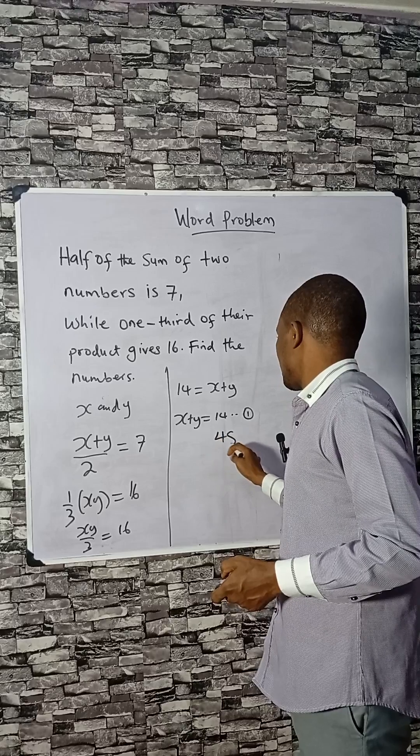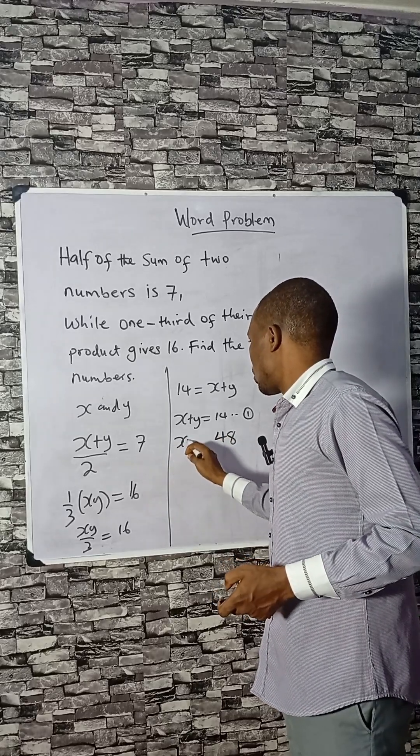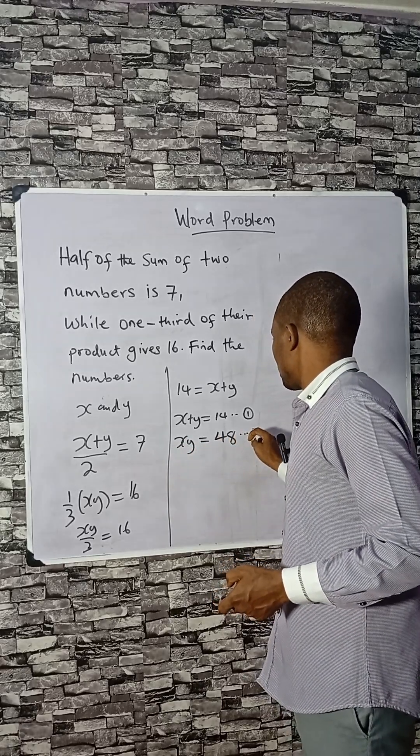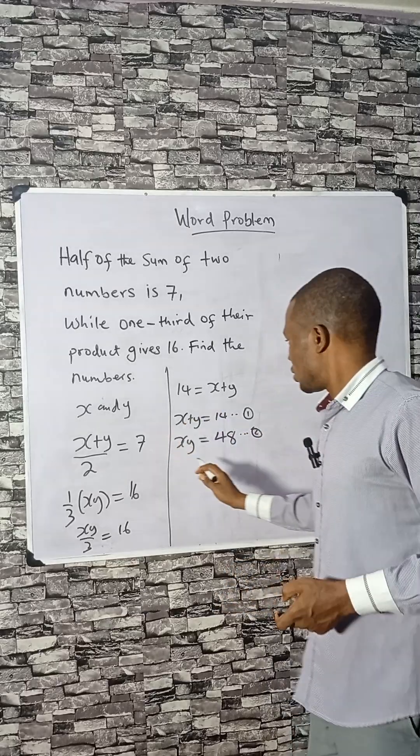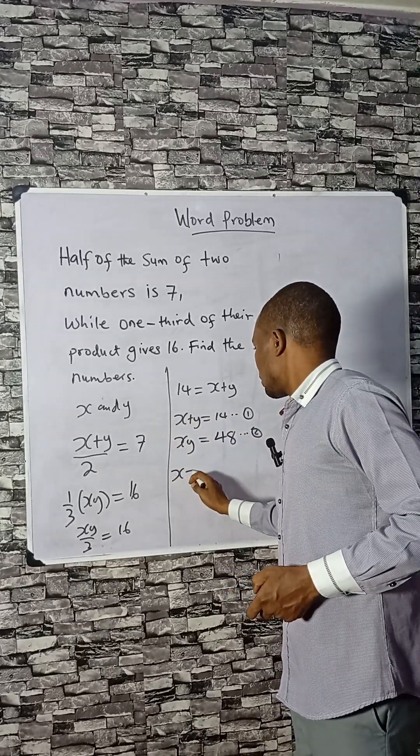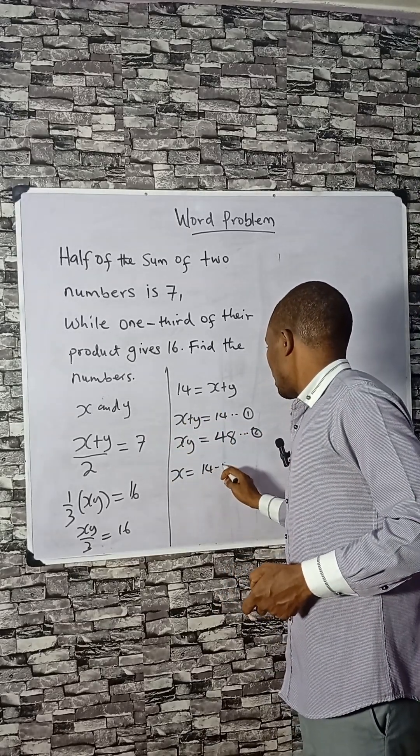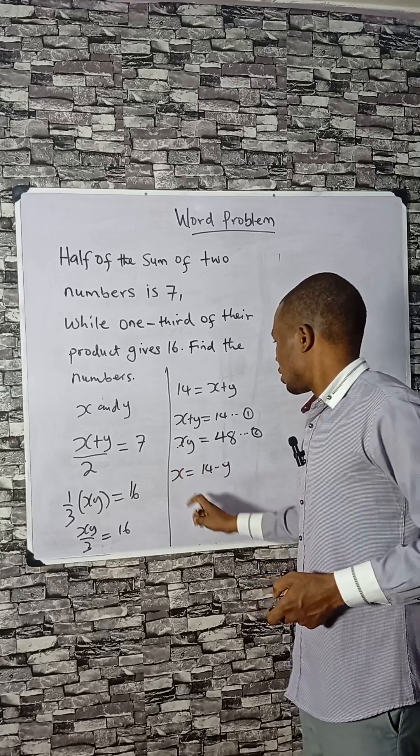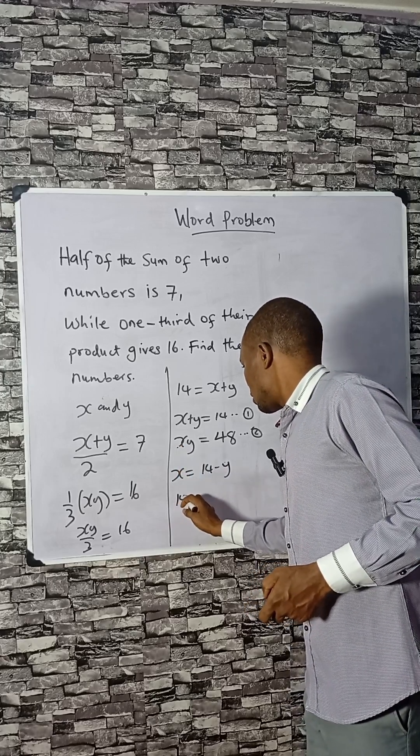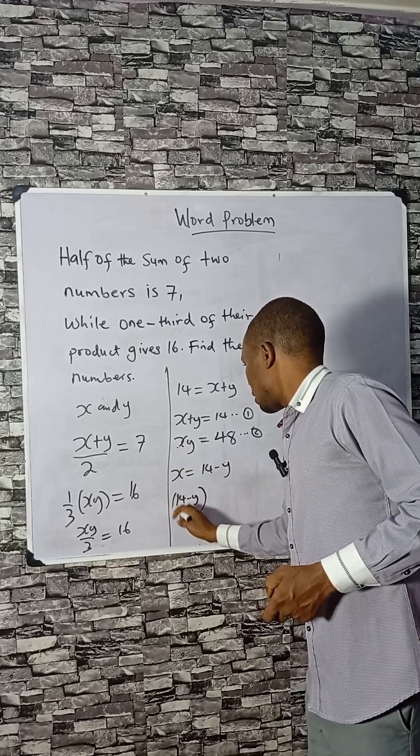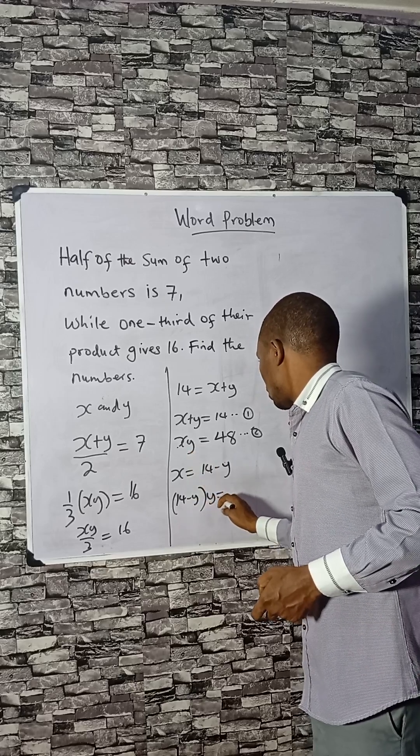I will have x times y equals 48, equation 2. So you can solve this. You can make x the subject here. That will be 14 minus y. Replace it here, that will be 14 minus y times y equals 48.